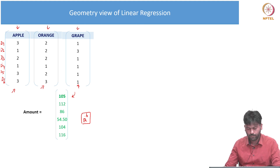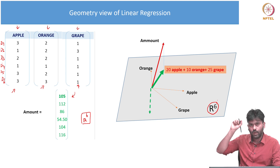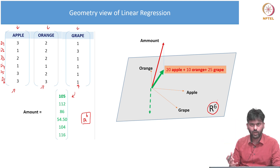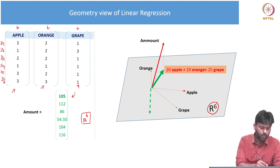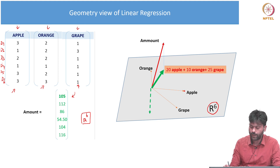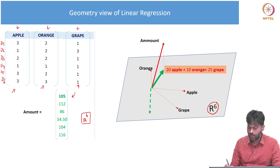Now, R6 — a six-dimensional point. We can visualize it. But how do you see it in six dimensions? In the apple, one day, one point is one vector in the six-dimensional space. Grape is one point, orange is one point. So this is one vector: apple, grape, orange.